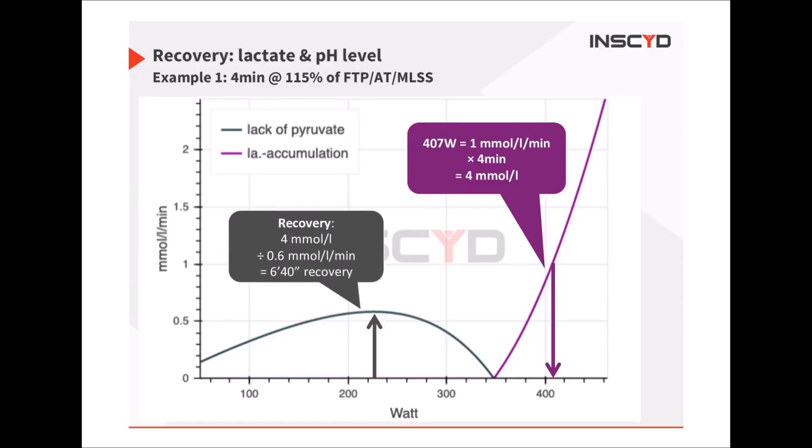Looking at the purple box as an example: the athlete produces one millimole of lactate per minute. If you multiply that by four minutes, you arrive at four millimoles. Then you pick the value from the gray curve — in this case 0.6 — and divide four by 0.6. That gives you the time needed to fully recover or fully combust that much lactate.